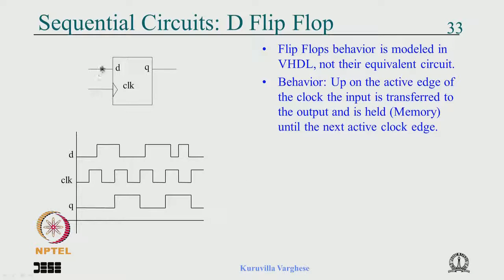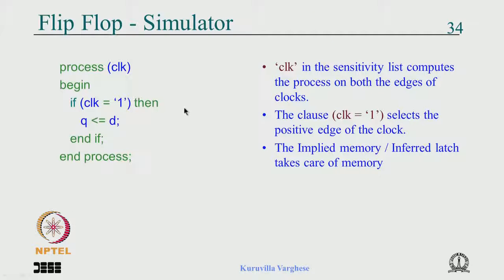A flip-flop is modeled by its behaviour, not by what it is composed of. The behaviour is: upon the clock edge, D goes to Q. If you write a process sensitive to clock, and inside check if clock is 1 then Q gets D — for the simulator, when a rising edge occurs it goes top to bottom, checks if clock is 1, and assigns Q from D. This event combined with clock equal to 1 makes it a rising edge.